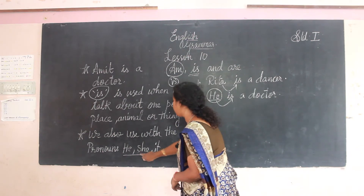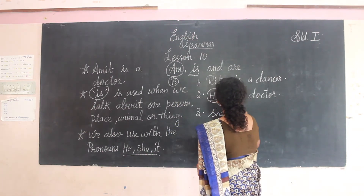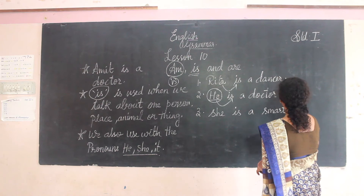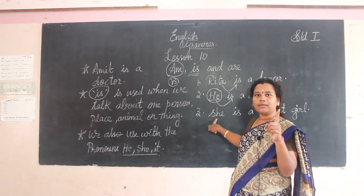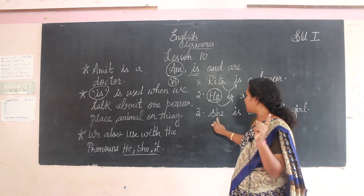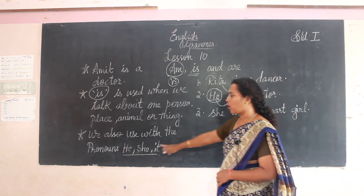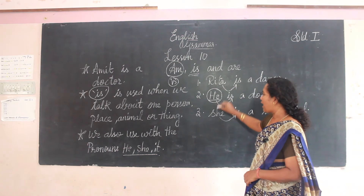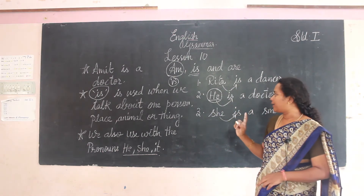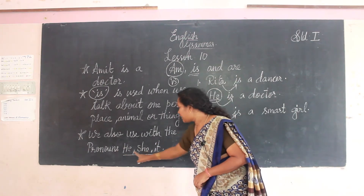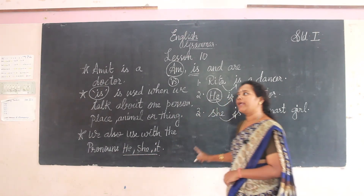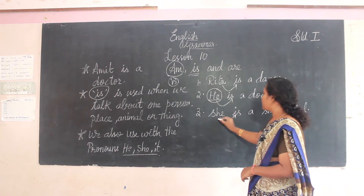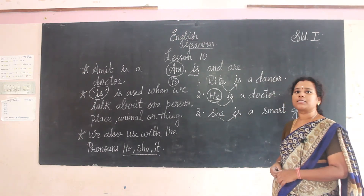Now see the example with 'she': 'She is a smart girl.' She is one girl. She is also a pronoun. After 'she' we write 'is'. She is a smart girl. He is a doctor.